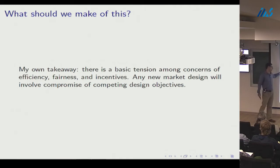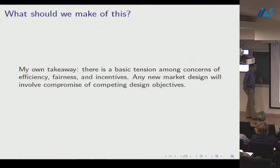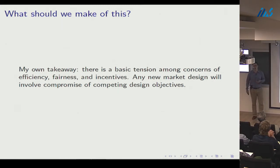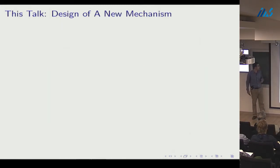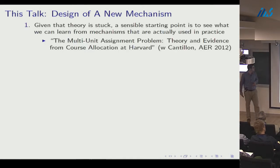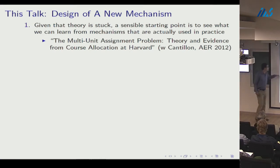My takeaway from the dictatorship theorems is that there's a tension among concerns of efficiency, fairness, and incentives, and that progress requires some compromise among these competing objectives. Let me now talk about the design of a new mechanism, beginning with a series of papers — the first of which is mostly empirical, with Estelle Cantillon.